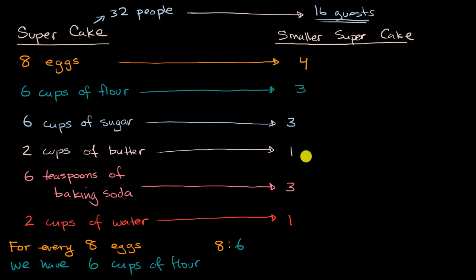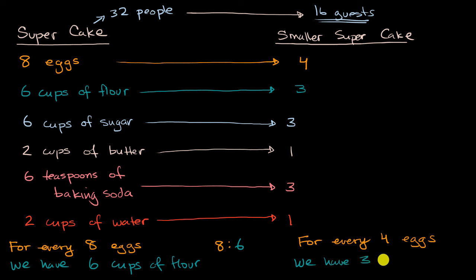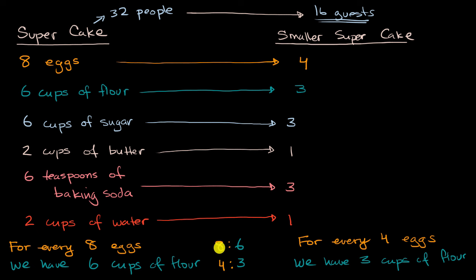Well, what about for the smaller cake? For every four eggs, we have three cups of flour. So what would this ratio be? For every four eggs, we have three cups of flour. So the ratio of eggs to flour is four to three. Now it turns out that these are the exact same ratio. If you have eight eggs for every six cups of flour — or for every eight eggs you have six cups of flour — that's the same thing as for every four eggs you have three cups of flour.